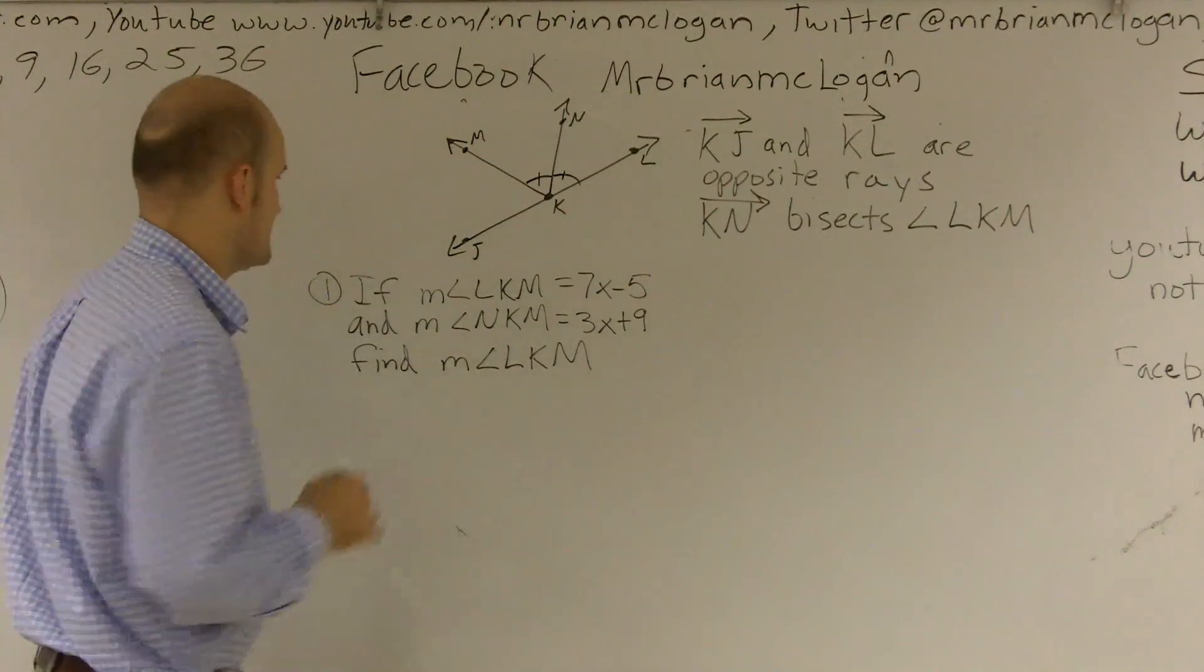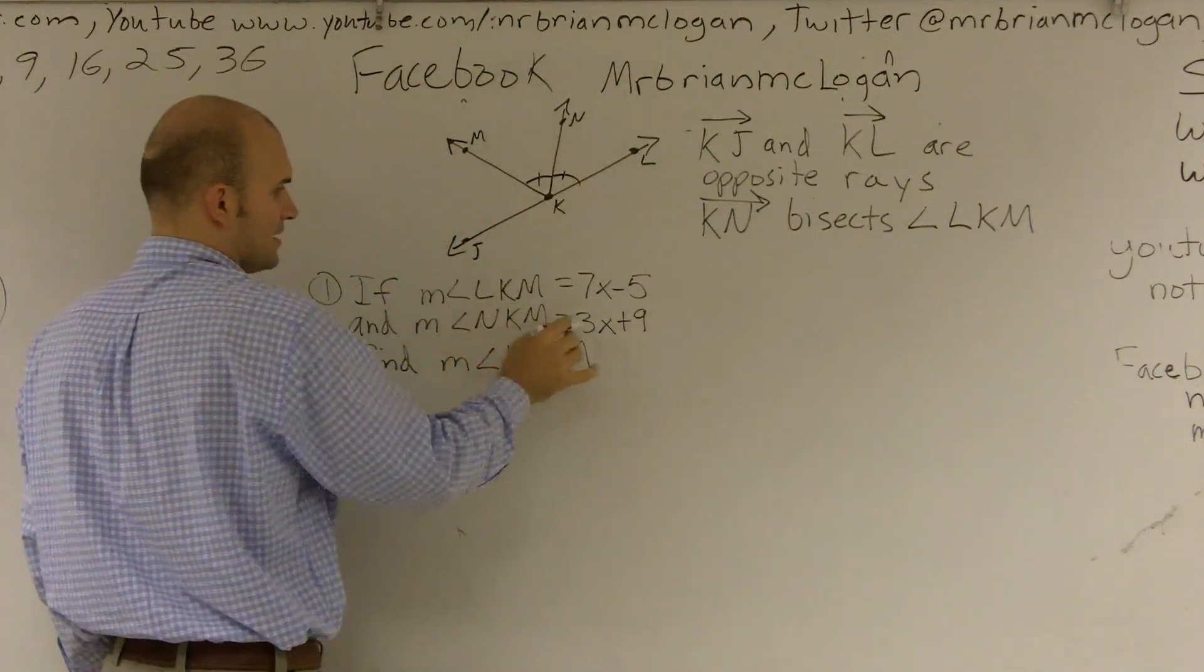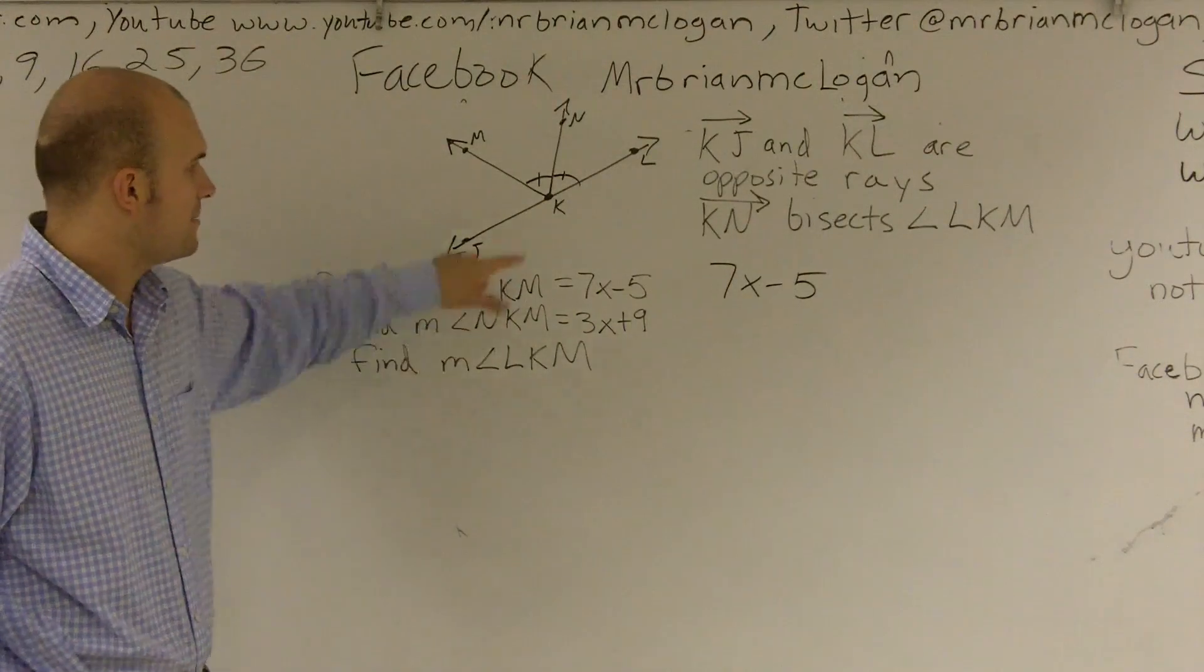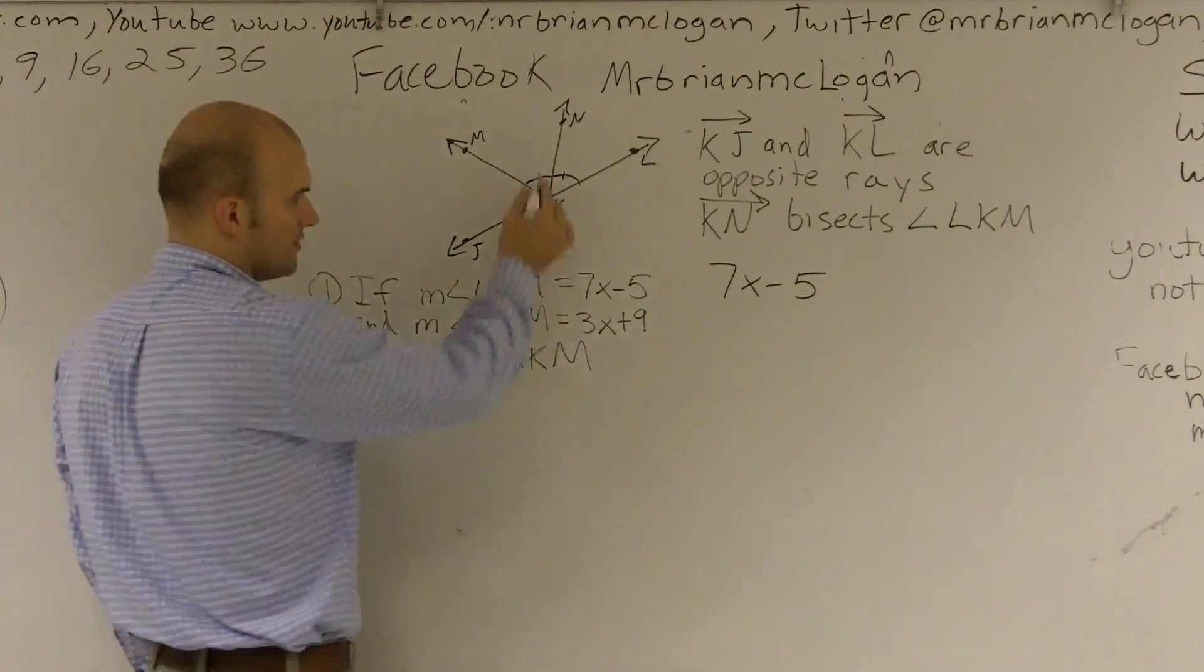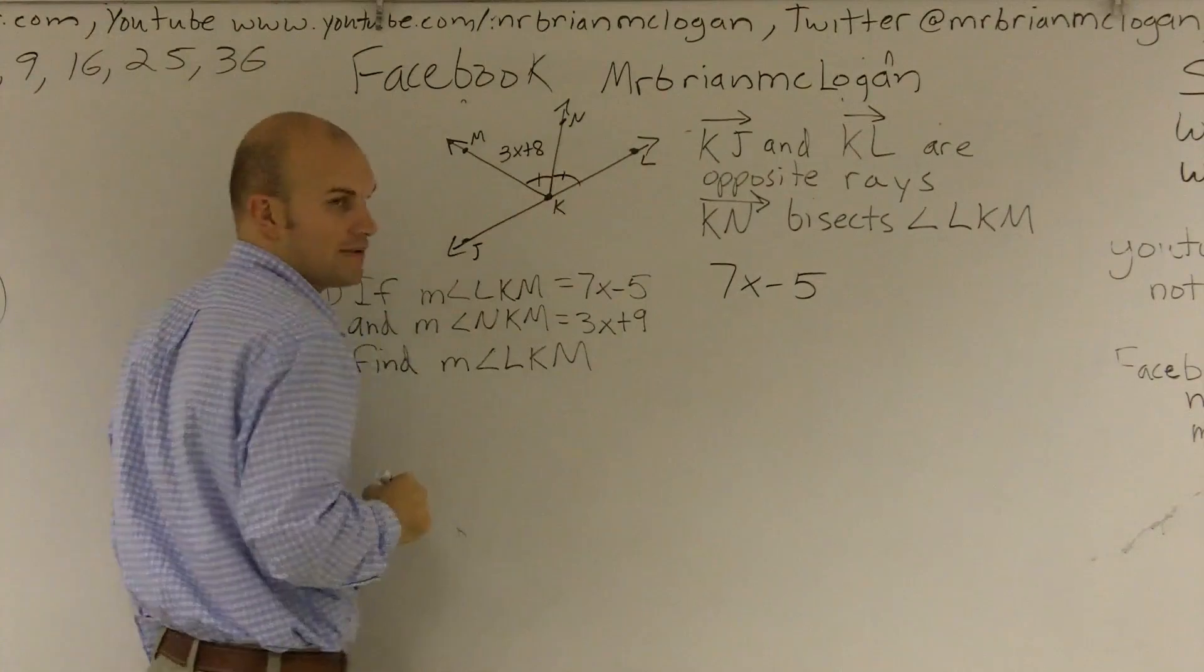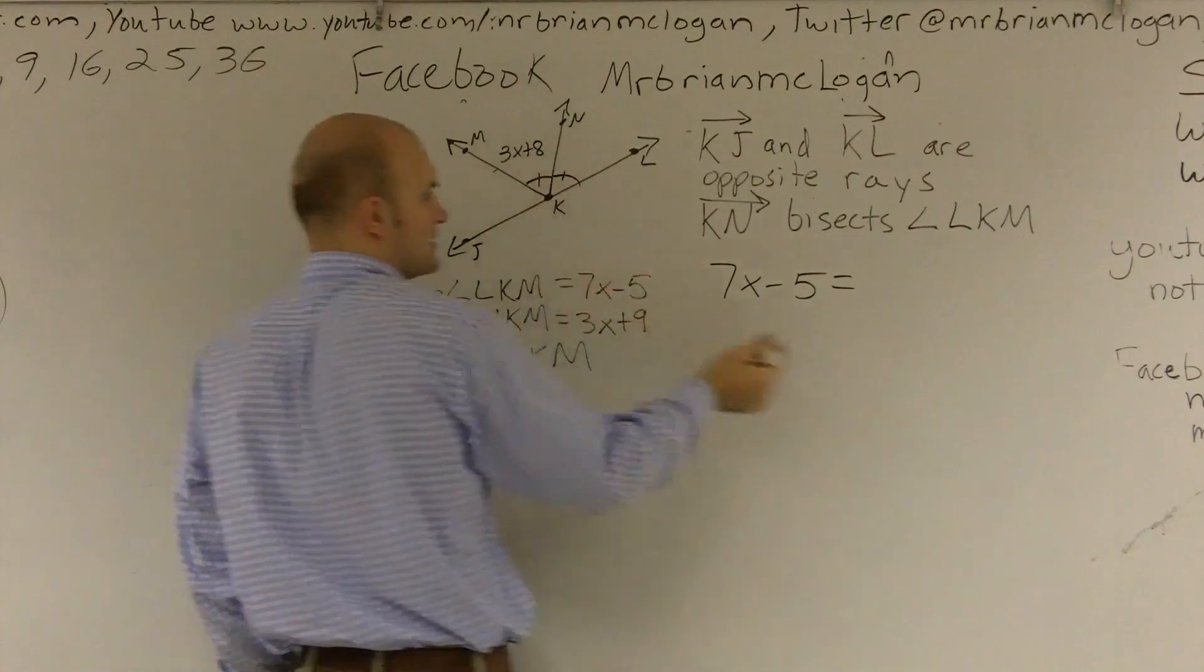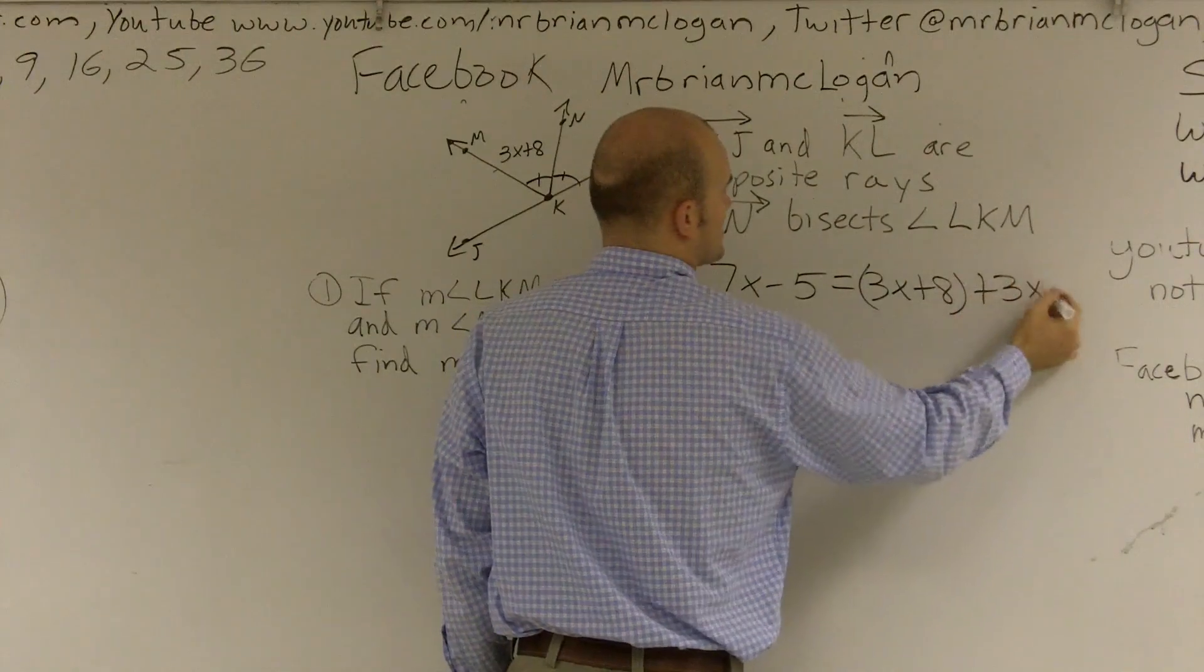So on the first problem it says if measure of angle LKM, so it's L to K to M, so this whole angle is equal to 7X minus 5, so we can write 7X minus 5, and measure of angle NKM, so N to K to M, is equal to 3X plus 8. So if I know that this is 3X plus 8, and I just told you that since this bisects, this is equal to 3X plus 8, I can write that the whole angle, like from LKM, is going to equal both of these combined, or added together, so 3X plus 8 plus 3X plus 8.